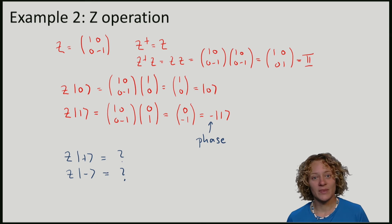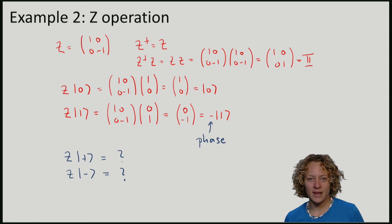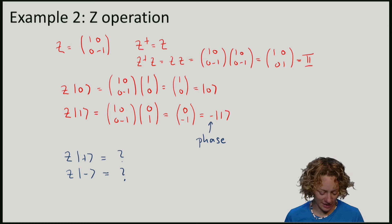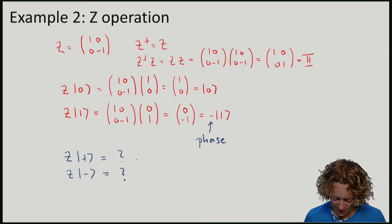If we do this calculation, we will find that Z actually swaps the two basis elements around. So if I do this calculation, which you should be doing, Z applied to plus gives me minus, and Z applied to minus gives me plus.